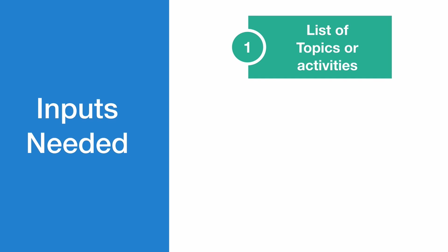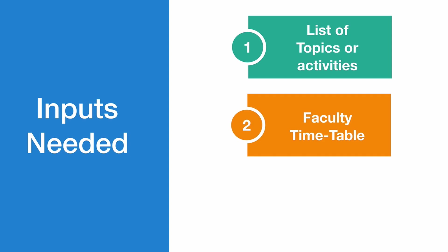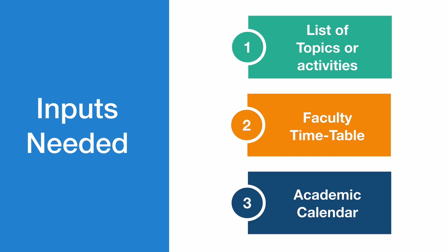The lesson planner needs some basic information to be entered. The inputs needed are: number one, the list of topics or activities — the list of topics will include the various topics we wish to teach in class, and the activities will include tests, guest lectures, or similar activities we plan to conduct. Second, we need the faculty timetable. The third input is the academic calendar of the department or institute, which gives us various dates during which we may not be able to conduct academics.